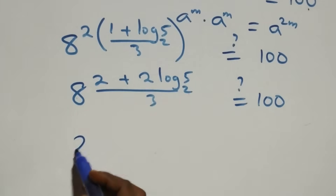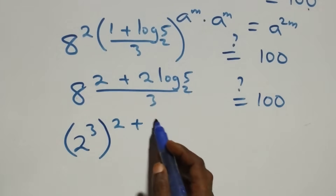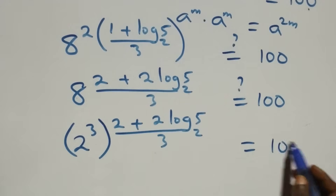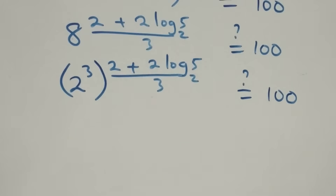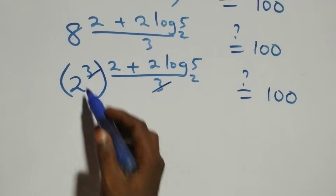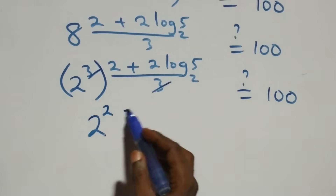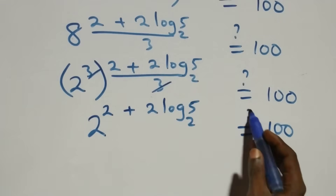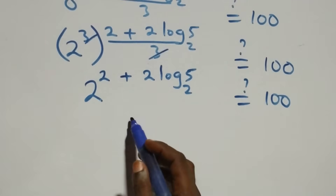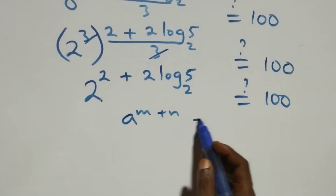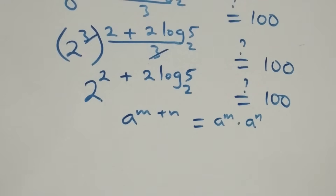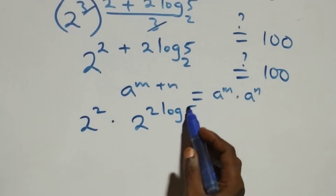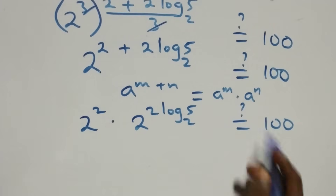We express 8 as 2 raised to power 3, giving us 2 raised to power 3, raised to power (2 plus 2 log 5 base 2) all over 3. The 3 in the exponent and the denominator cancel, leaving 2 raised to power (2 plus 2 log 5 base 2). Applying the law of indices, this becomes 2 squared times 2 raised to power 2 log 5 base 2, which equals 100.